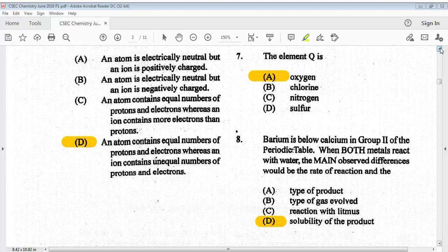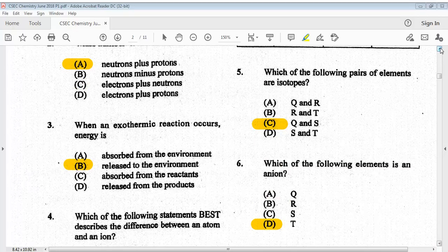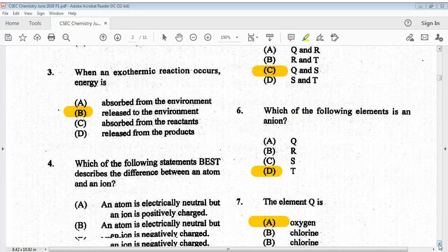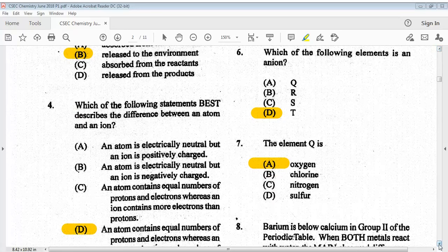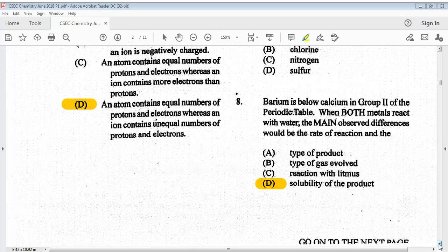Let's go to number five. Which of the following pairs of elements are isotopes? The answer is C, Q and S. Question six: which of the following elements is an anion? The answer is D, T. Question seven: the element Q is? The answer is A, oxygen.